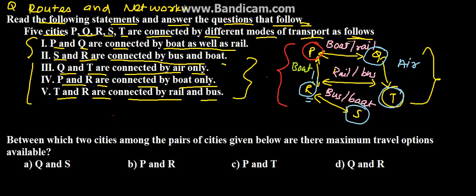The next part of the question is between which two cities among the pairs of cities given below are there maximum travel options available. That is maximum travel options may be air, may be boat, bus, or rail. Options given are Q and S, P and R,